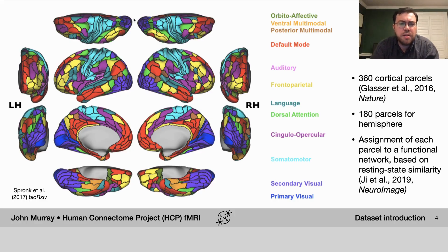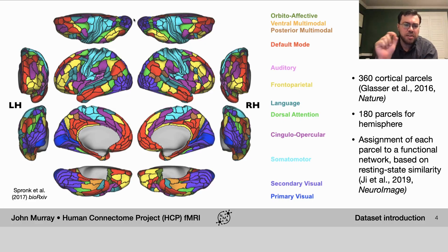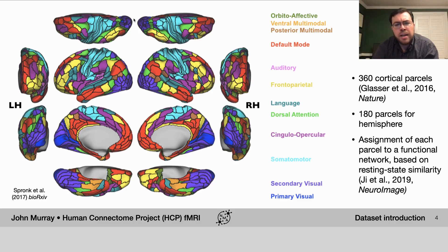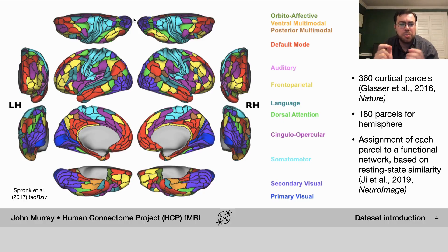You can see here the cortical parcels that we use to construct these data. A parcellation is an assignment of different points in the brain to a contiguous region, and the data are expressed for that parcel as the average value for every point within that region. Here we're using a parcellation of 360 parcels from a recent paper using the HCP dataset, including 180 parcels per hemisphere, with homologous parcels between the two hemispheres.